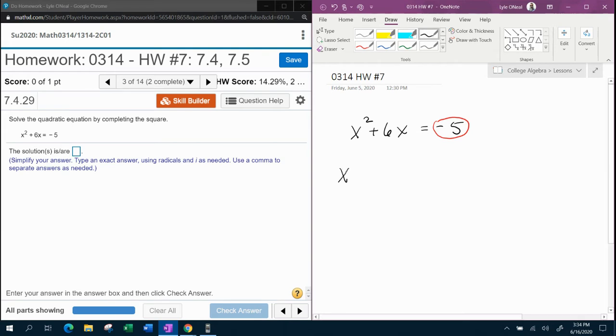So I'm going to recopy this problem. And what we're going to do is we're going to actually add a number that we come up with that's going to complete the square. And whatever I add to one side, I have to add to the other.